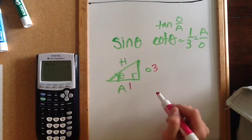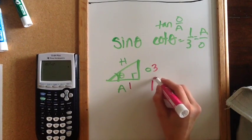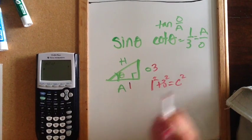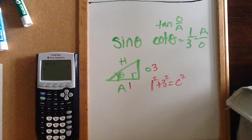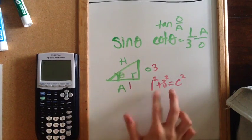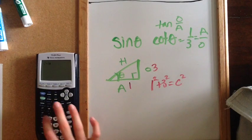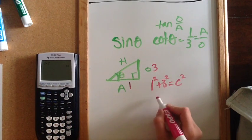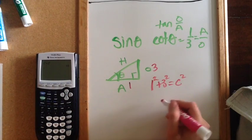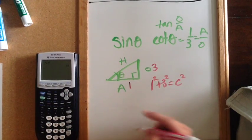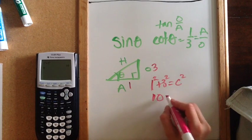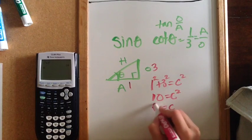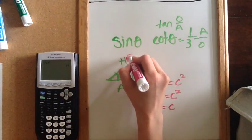On this one we don't have the hypotenuse, so to find the third side I'll do 1 squared plus 3 squared equals c squared, since we're talking about the hypotenuse. You can put this whole thing in the calculator at once — 1 squared plus 3 squared — or do them separately and add. c squared is 10, which means c is √10. So this side is √10.